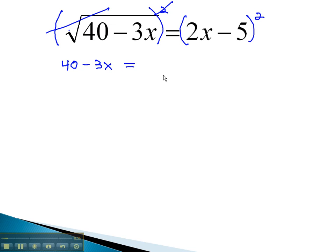On the right side, we must square this binomial by squaring the first term. 2x squared is 4x squared, and then the product is there twice. 2 times negative 5 is negative 10, and another negative 10 is negative 20x. Finally, square the last term, negative 5 squared is positive 25.